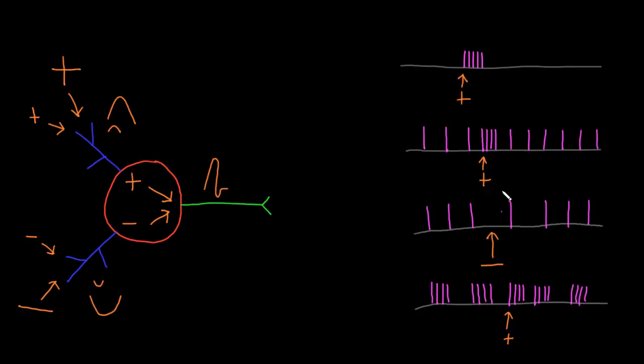The advantage of systems where neurons fire at regular rates spontaneously or in bursts is that information passed to target cells can be fine-tuned in either direction. A neuron that is quiet at rest can only convey information in one direction — from no action potentials to trains of varying frequencies and durations — and cannot pass along inhibitory information. But with spontaneously or burst-firing neurons, information from both excitatory and inhibitory inputs can be passed along in a more fine-grained fashion.